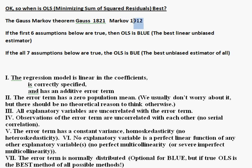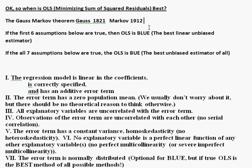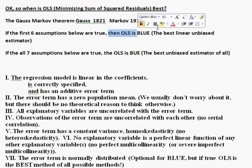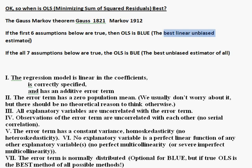People called it the Markov theorem for a long time, and then some people started figuring out that the famous mathematician Gauss had figured this out earlier. So now we call it the Gauss-Markov theorem. It gives us a list of six assumptions — and there's an optional seventh one — where if the first six assumptions are true, then ordinary least squares is what we call BLUE, which stands for Best Linear Unbiased Estimator.